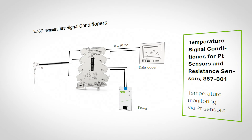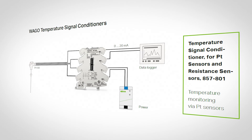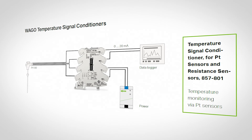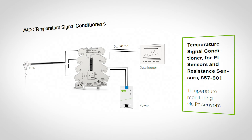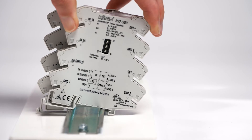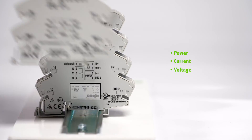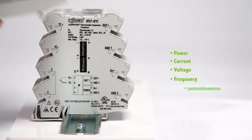Temperature signal conditioners: quite simply, these devices take inputs from RTDs — resistive temperature devices — such as PT100 probes or thermistors, and convert this into a 0 to 10 volt or 4 to 20 milliamp analog signal.